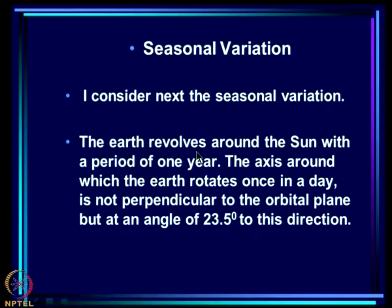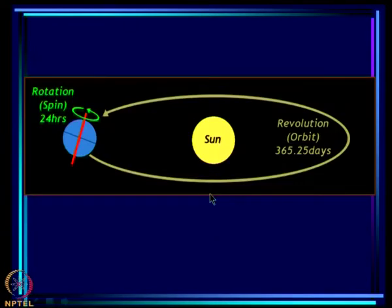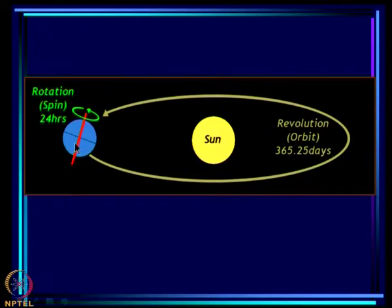We now consider seasonal variation. Why do we have variation with season at all? The earth revolves around the sun with a period of one year. The axis around which the earth rotates once a day is not perpendicular to the ecliptic plane — the axis of rotation makes an angle of 23.5 degrees with the perpendicular to the ecliptic plane.